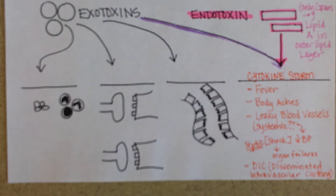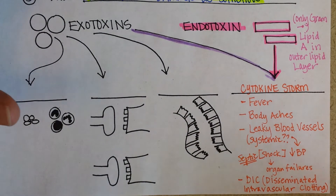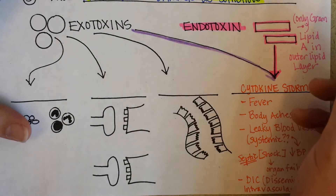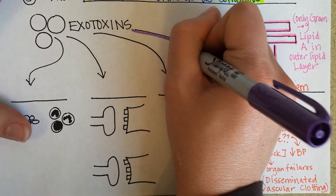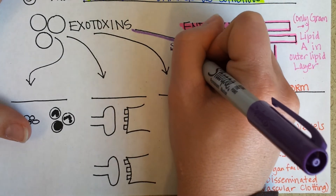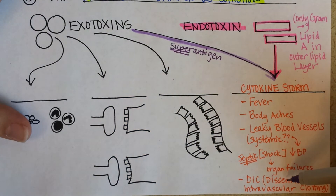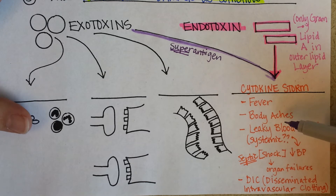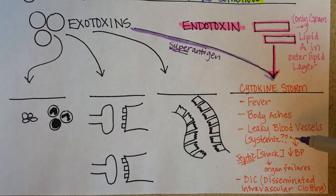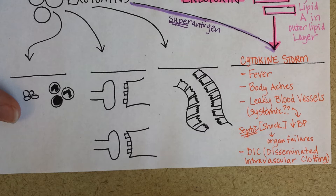Usually though, if gram-positive bacteria are doing this, instead of calling it just causing a cytokine storm because of the lipid A, the effect is usually due to what's called a superantigen. It's called a superantigen because it is super irritating to your immune system, which then does all of these things to try and fight it off, but it ends up being counterproductive — decompensatory, meaning that our body's overreaction can actually cause our own organs to fail.